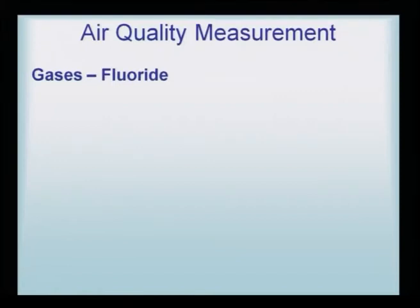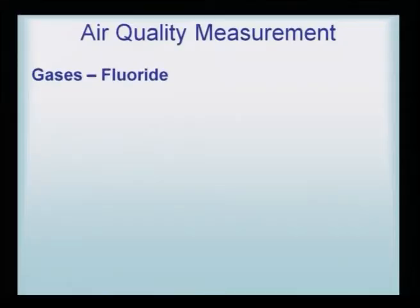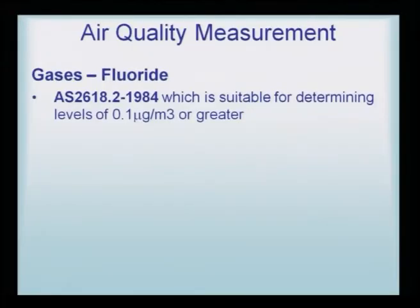Even fluoride can be one of the air pollutants. These other pollutants have only been noticed in air quality under certain conditions, but there has to be a testing protocol ready to analyze them. There is an Australian method called AS 2618.2, released in 1984, which is suitable for determining fluoride levels of 0.1 microgram per cubic meter or greater.